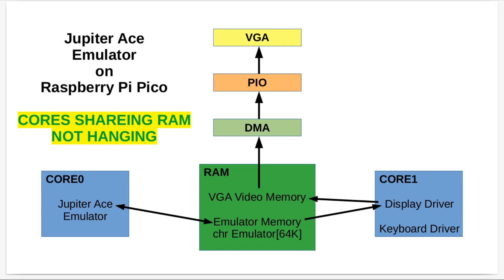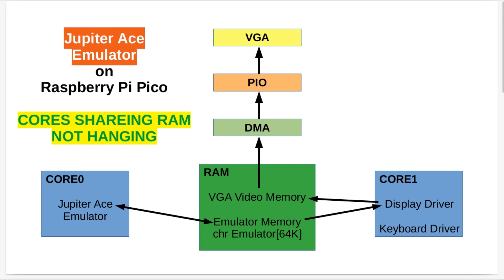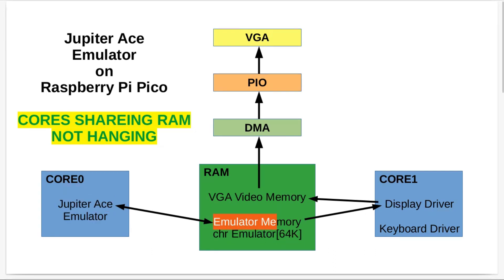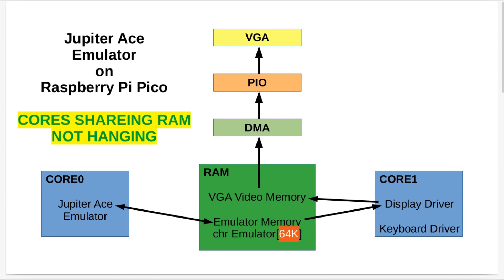A couple of videos ago I went over an application I've written on the Raspberry Pi Pico — a Jupiter ACE emulator — and it is the first application I've written which actually uses both cores. It worked just fine with no issues. The emulator runs on core zero and has 64K of RAM allocated to it, defined as a character array, which the emulator reads and writes from.